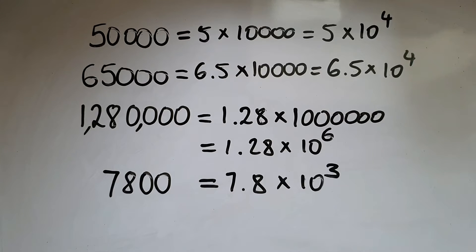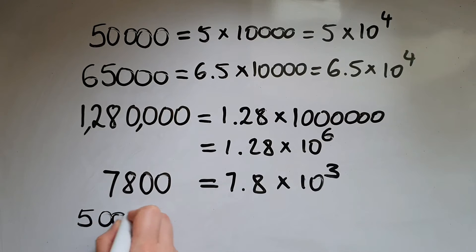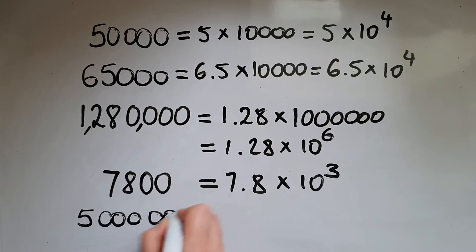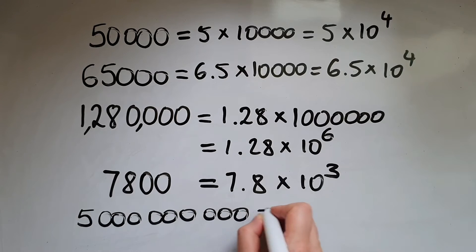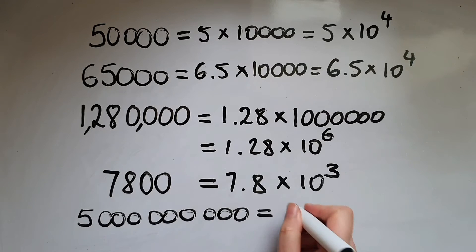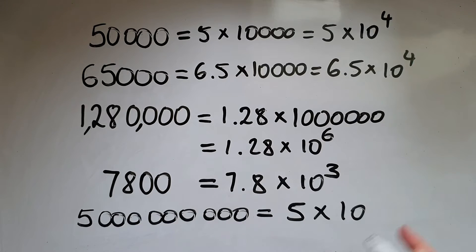What if we have five billion, for example? We'll write this as 5 times 10 to the power of 9.